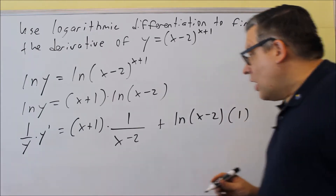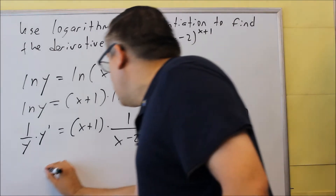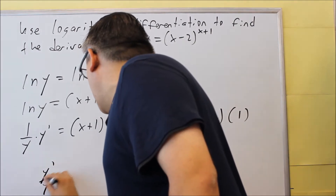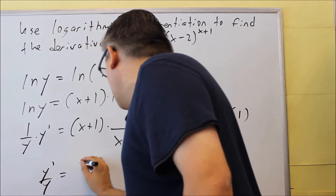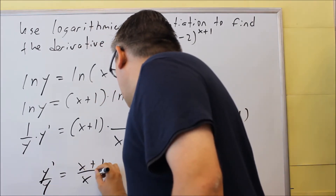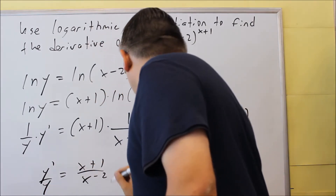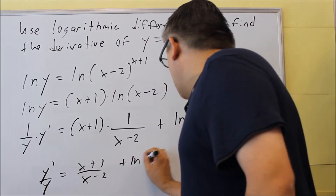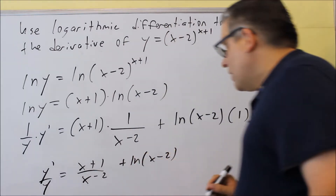So we also have the second piece, natural log of X minus 2, times the derivative of the first, which is 1. Writing it all out, we get Y-prime over Y equals X plus 1 over X minus 2, plus natural log of X minus 2.